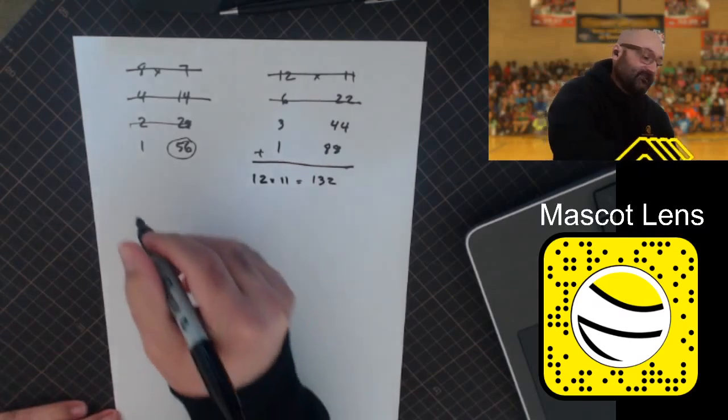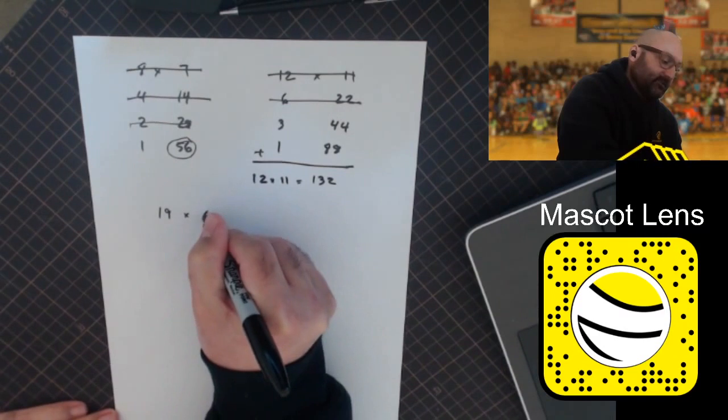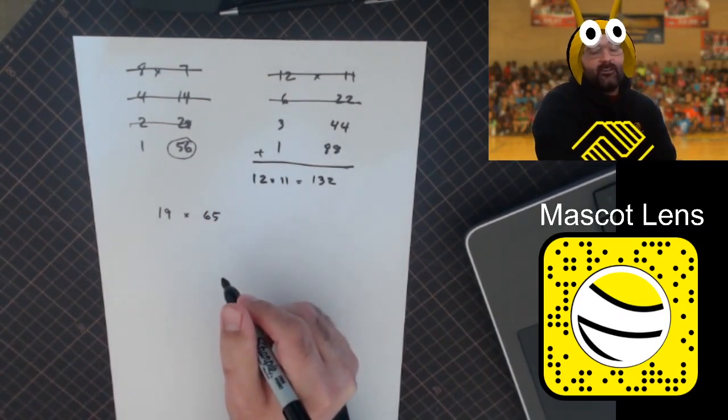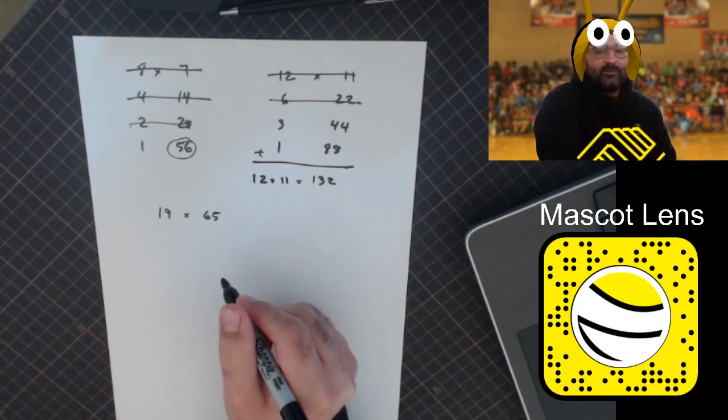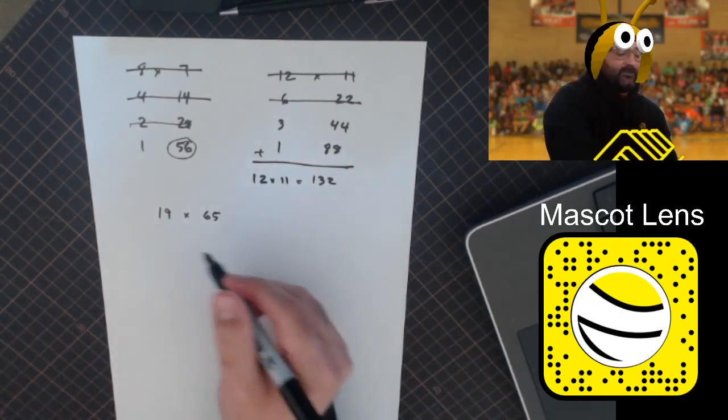For the last example, we'll go bigger: 19 times 25. It works for numbers as big as you want to try. You can check it out in your calculator to see if you're doing it right.